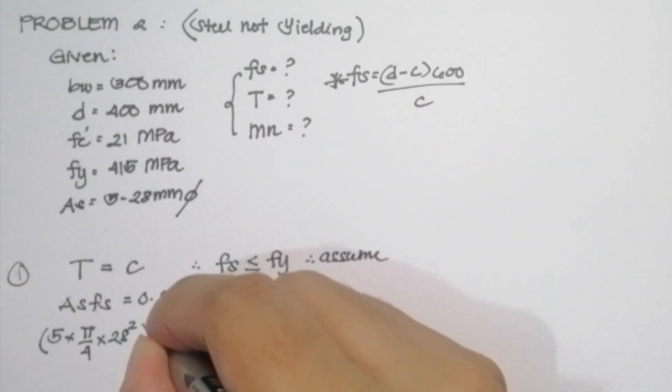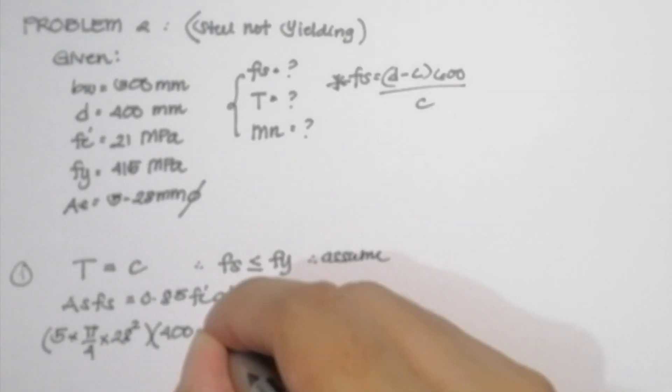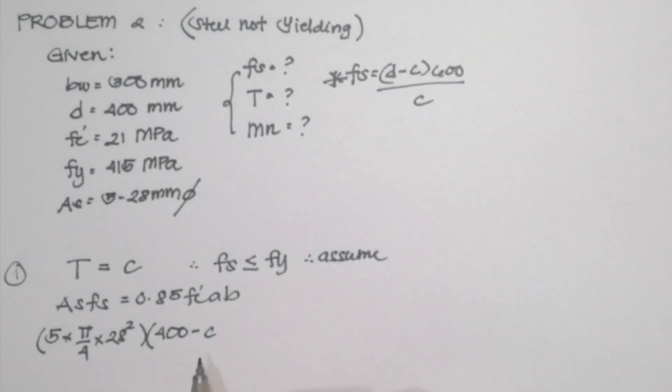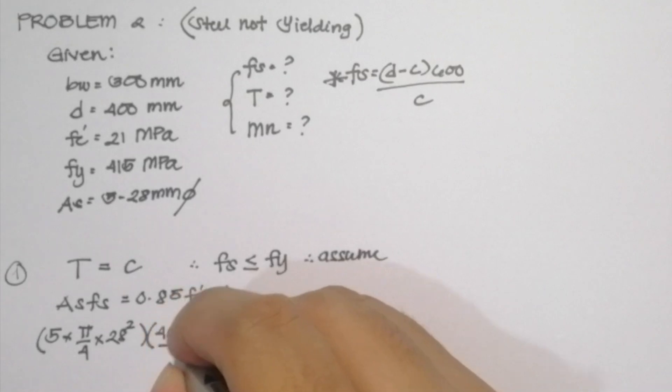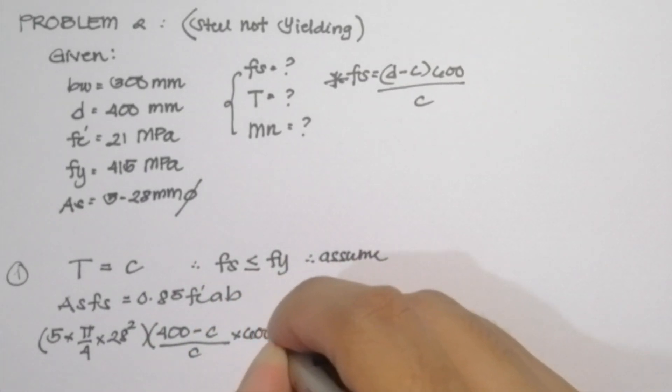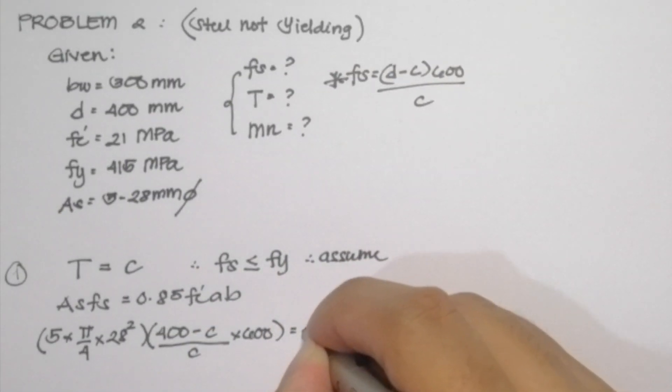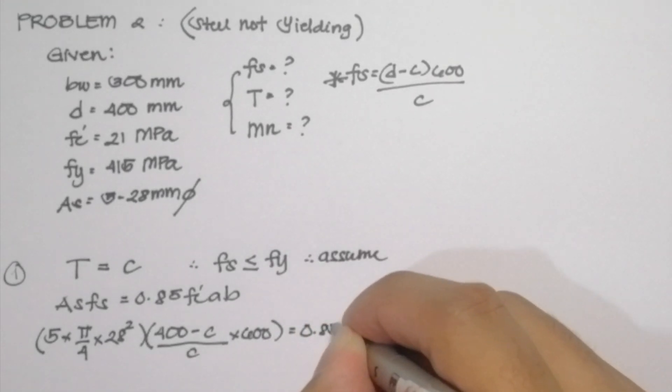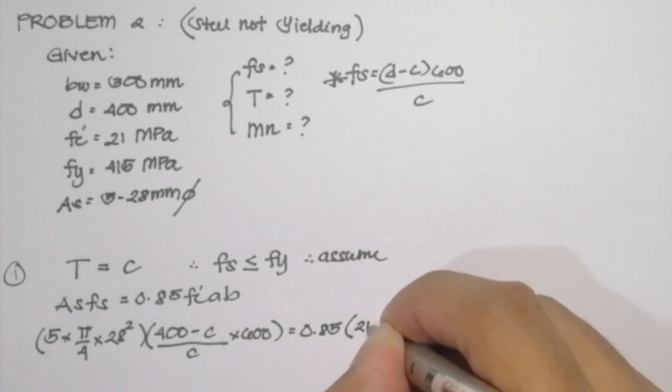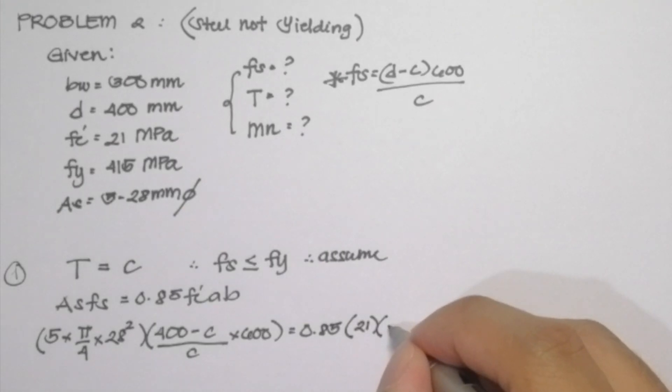So rewrite our values, 400 minus C all over C multiplied by 600 is equal to 0.85 compressive strength of 21 multiplied by A. So we cannot use A because our variable is C.